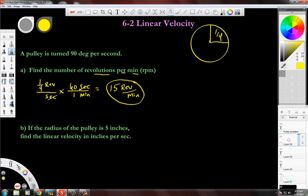Now part B says, if the radius of the pulley is five inches, find the linear velocity in inches per second. Inches per second. Okay.